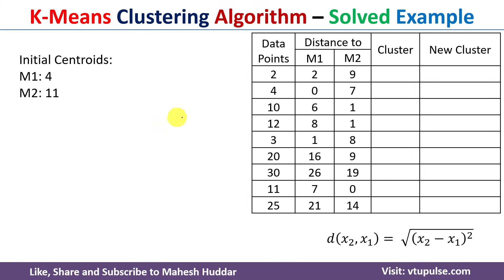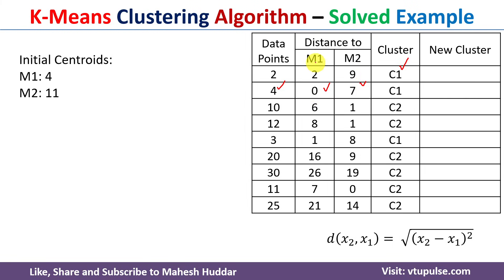Once we calculate the distances from all data points to both initial centroids, we check which distance is minimum for each data point. For data point 2, the distances are 2 and 9 — the minimum is 2, which is with respect to m1, so data point 2 is assigned to cluster 1. For data point 4, the distances are 0 and 7 — minimum is 0, assigned to c1. For data point 10, distances are 6 and 1 — minimum is 1 with respect to m2, so it is assigned to cluster 2.